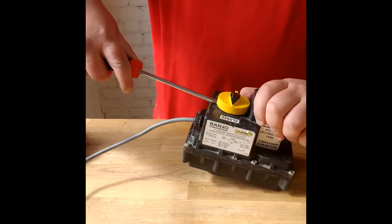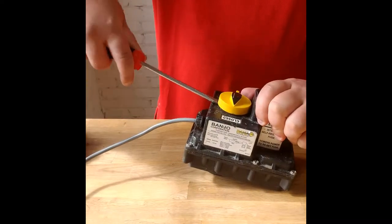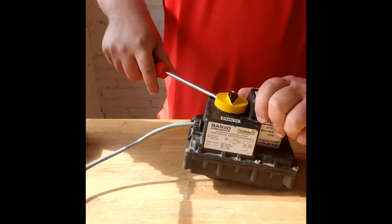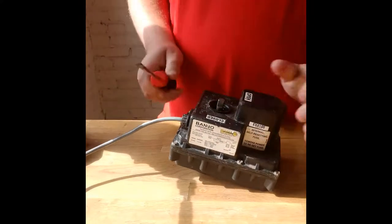First, you take this yellow position indicator off. Use a flat blade screwdriver, just pry around the edges and it pops off.